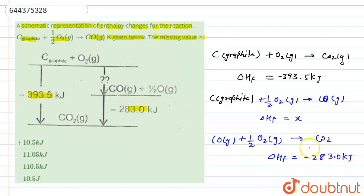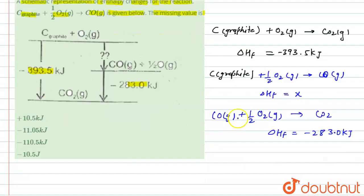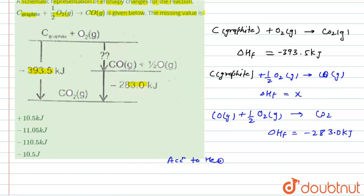The formation of CO₂ happens in two ways: first by direct formation, and second by the step-by-step reaction. According to Hess's Law, when any reaction proceeds, the sum of the enthalpies of formation in the step-by-step reaction is equal to the overall enthalpy of formation.